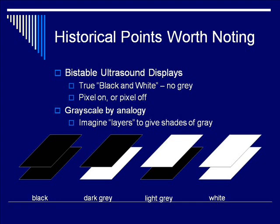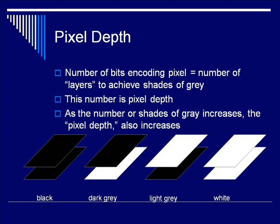When they started thinking about how to represent grayscale, rather than imagining bits per pixel directly, they said: let's imagine each bit is an entire bi-stable display, and that we're layering these displays to give different shades of gray. According to that analogy, the number of bits encoding a pixel is the same as the number of layers used to achieve a certain number of shades of gray. The number of bits encoding a pixel can also be called the pixel depth. As the number of shades of gray increases, the pixel depth also increases.